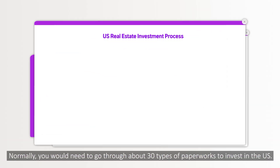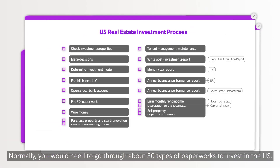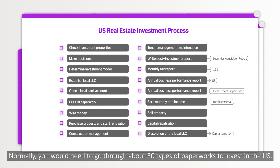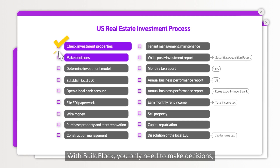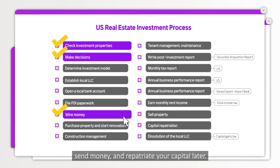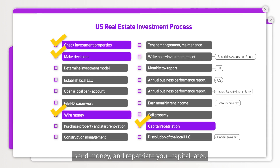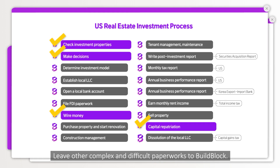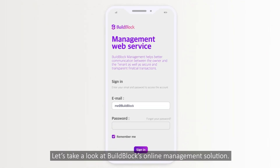Normally, you would need to go through about 30 types of paperwork to invest in the U.S. With BuildBlock, you only need to make decisions, send money, and repatriate your capital later. Leave the complex and difficult paperwork to BuildBlock. Let's take a look at BuildBlock's online management solution.